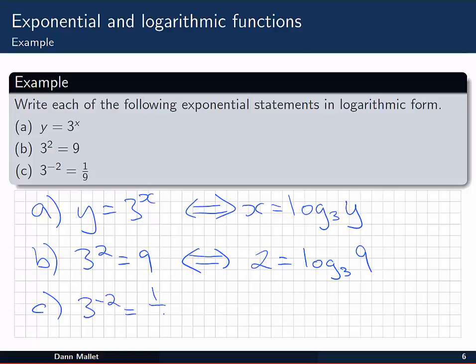And similarly, 3 to the minus 2, which we can see is 1 over 3 squared, or 1 over 9, is the same as saying that minus 2 is again the base 3 logarithm, this time of 1 ninth.